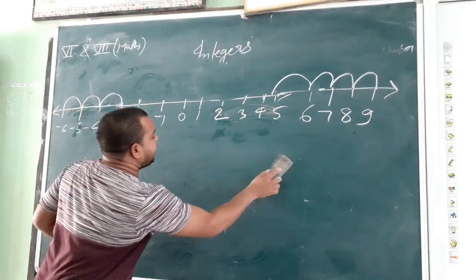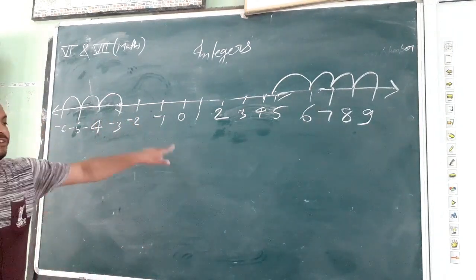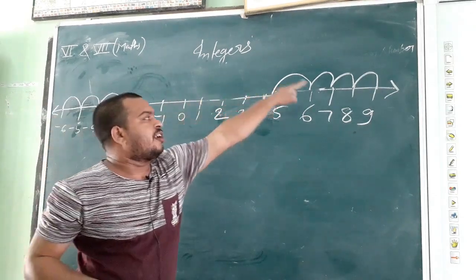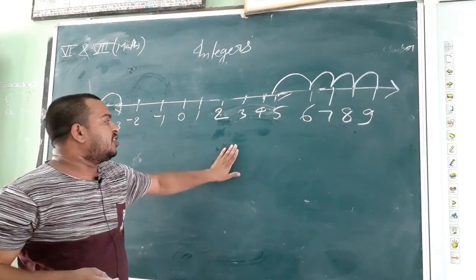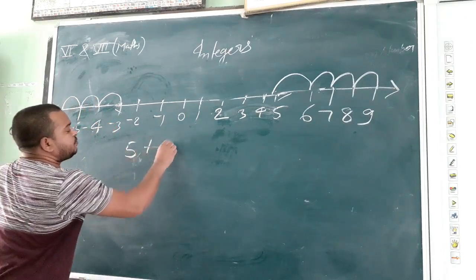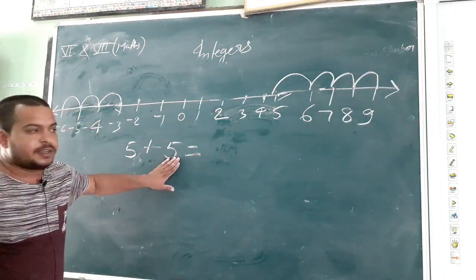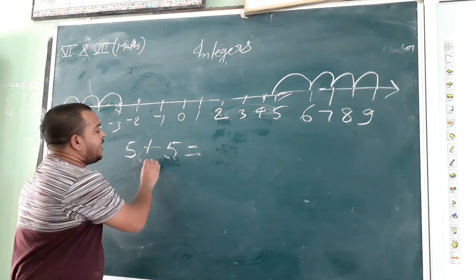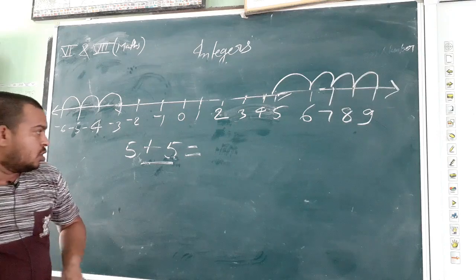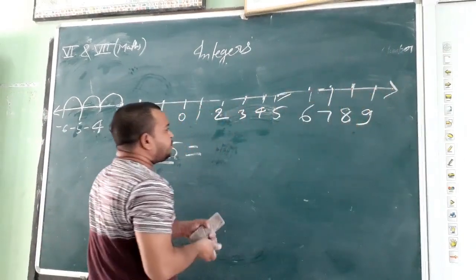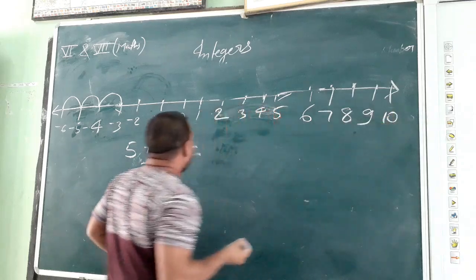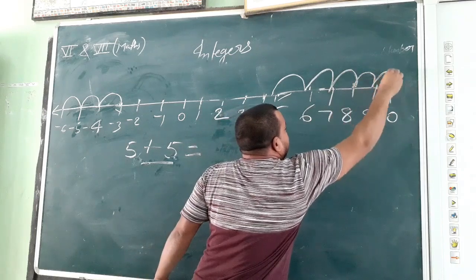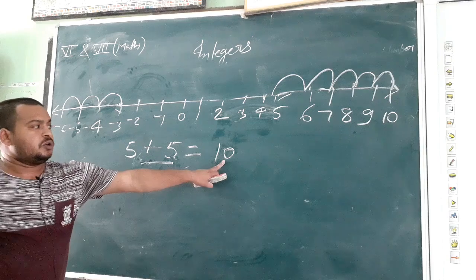In general, if we want to subtract a negative number from a number on the number line, we will move towards the right. And if we want to add a positive integer, we will also move towards the right. For example, 5 plus 5 is equal to 10.